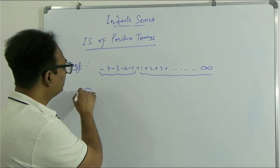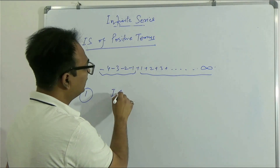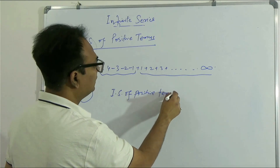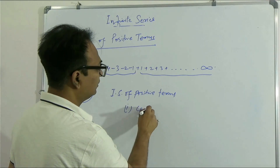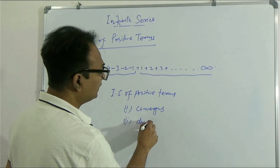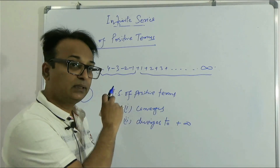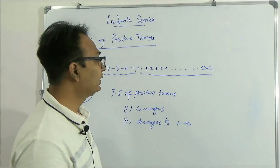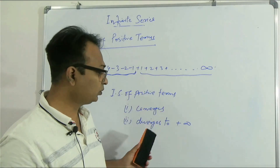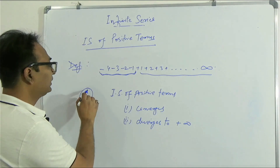An infinite series of positive terms either converges or diverges to plus infinity — not to minus infinity — because the terms are mainly positive. There are only a few negative terms, but the series is predominantly positive, so it diverges to plus infinity.